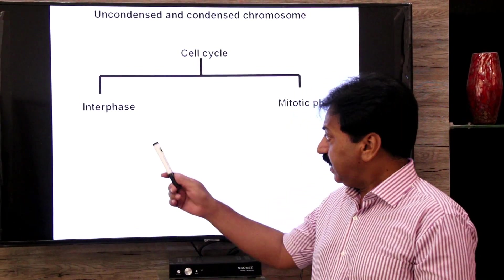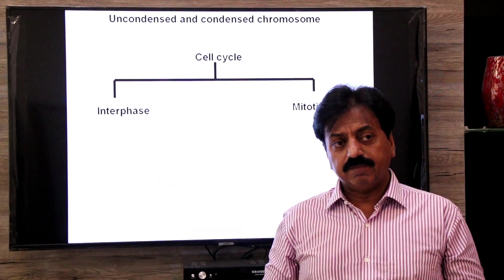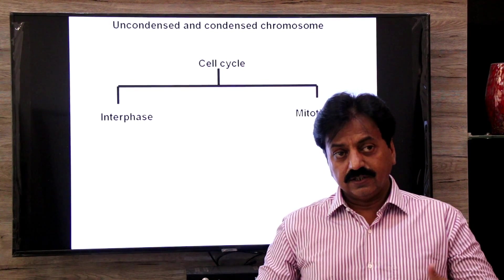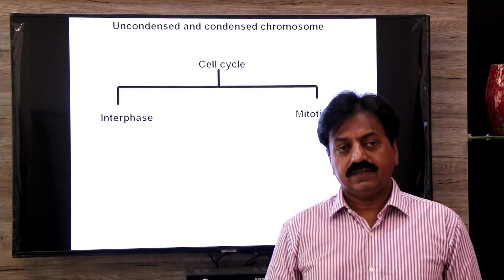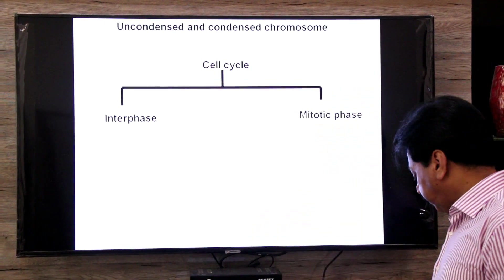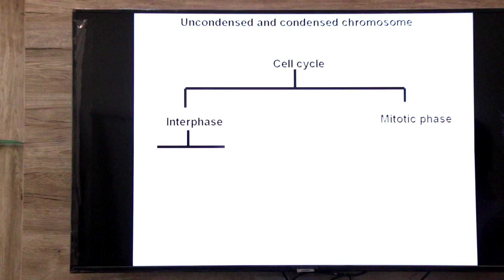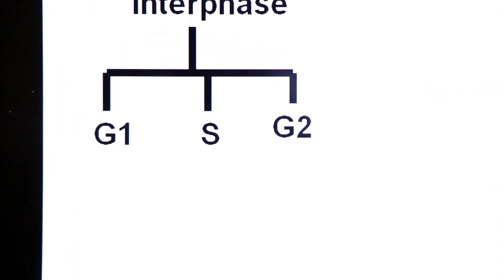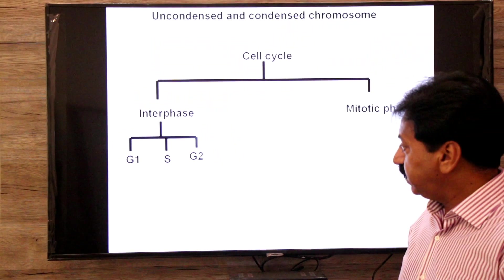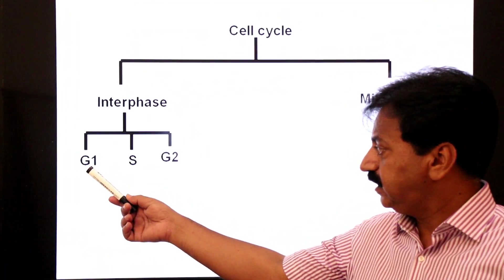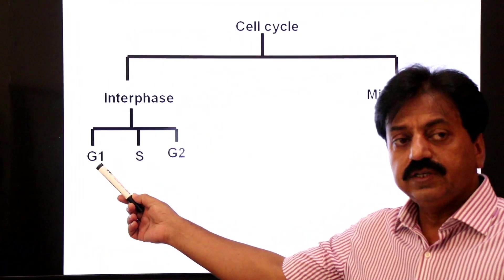Interphase mein DNA replicate karta hai aur sister chromatids banata hai. Interphase ke again teen sub-stages hain: G1, S, and G2. Interphase is further divided into three sub-stages: G1, S, and G2.